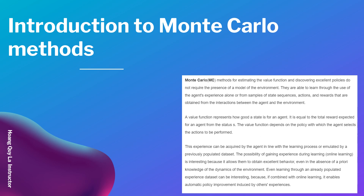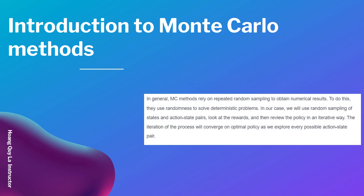The possibility of gaining experience during learning, which is online learning, is interesting because it allows us to obtain optimal behavior even in the absence of prior knowledge of the dynamics of the environment. Learning through an already populated experience dataset can also be interesting because, if combined with online learning, it enables automatic policy improvement induced by other experiences. In general, Monte Carlo methods rely on repeated random sampling to obtain numerical results, using randomness to solve deterministic problems. In our case, we use random sampling of state-action pairs, look at the rewards, and then review the policy iteratively. This iteration will converge to an optimal policy as we explore every possible action-state pair.